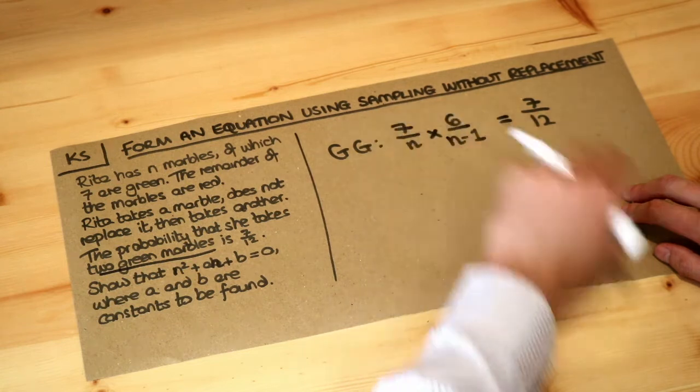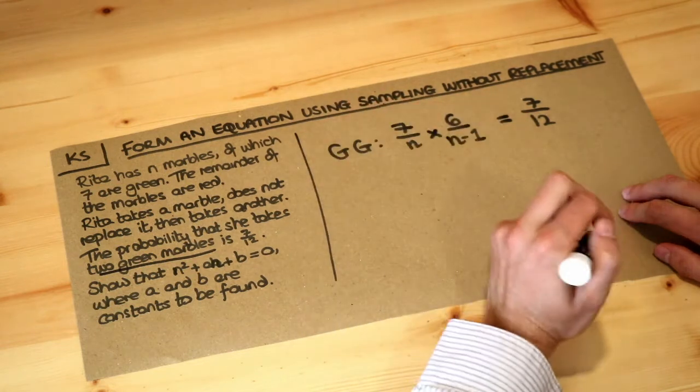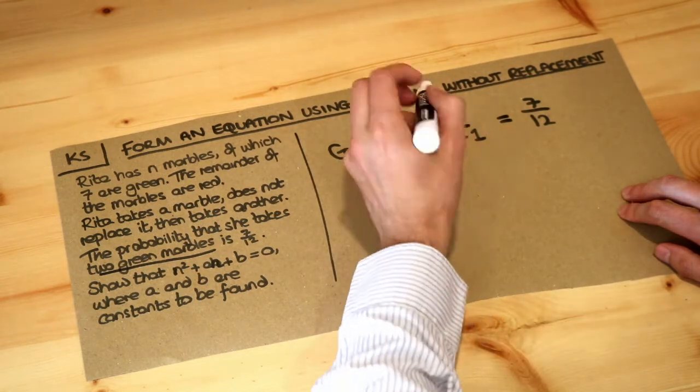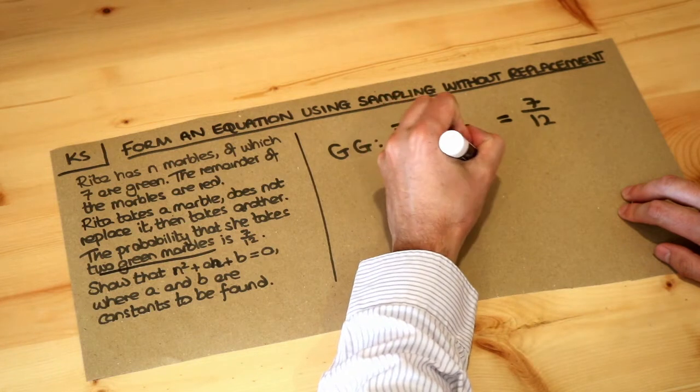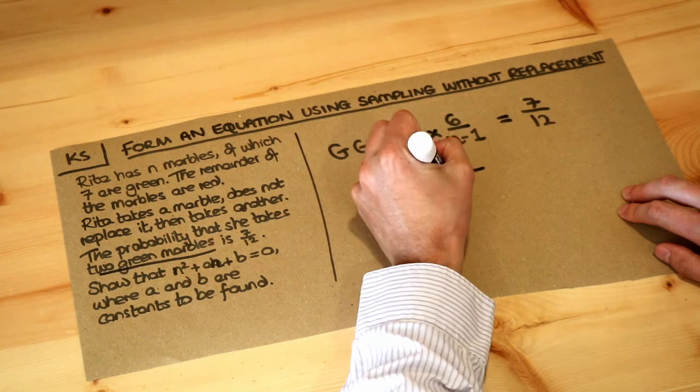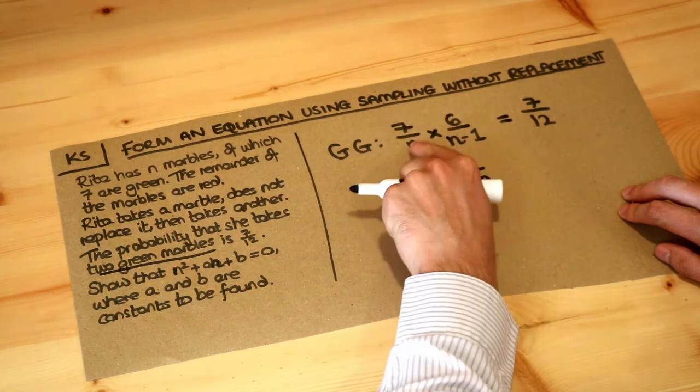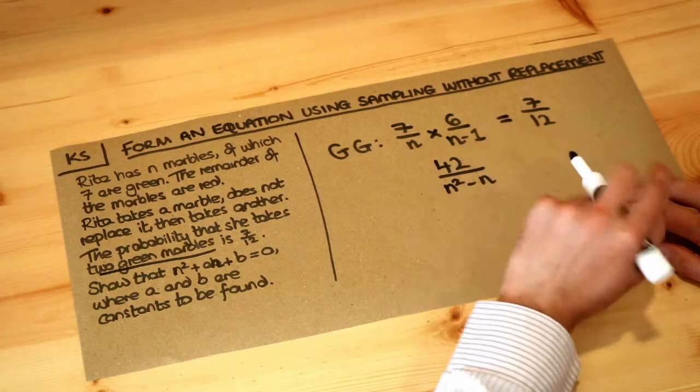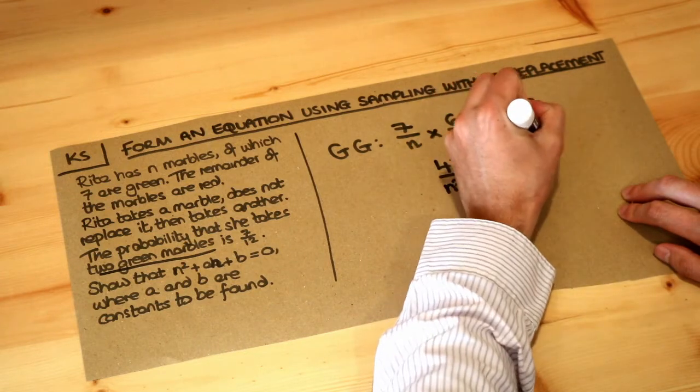Now we've got algebraic fractions here being multiplied together, so let's combine them into one fraction first. 7 times 6 is 42, and if we multiply the denominators, n times n minus 1 is n squared minus n. You could write it as n brackets n minus 1 first and then expand later, and that's equal to 7 twelfths.